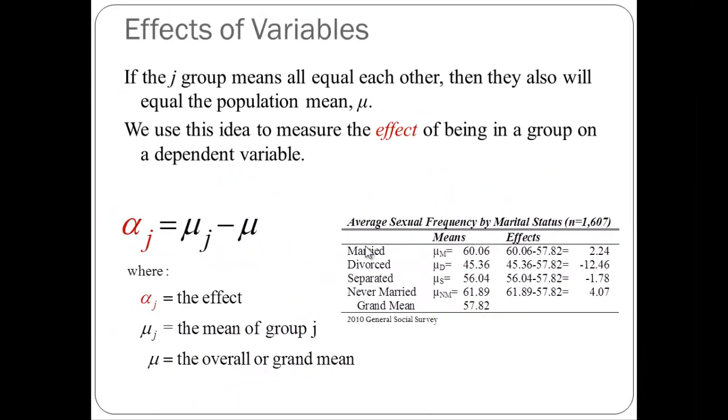What we're really asking when we look at ANOVA is, is there a statistically significant group effect? Does your marital status correlate or is it associated with some behavior, in this case, sexual frequency?